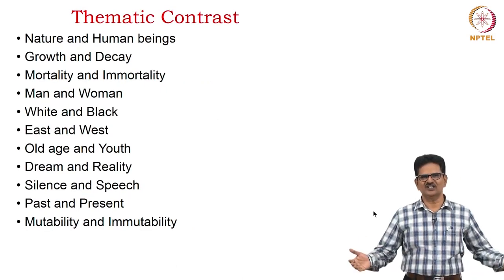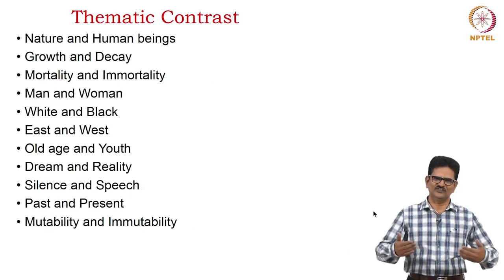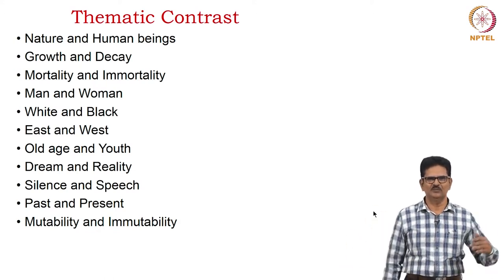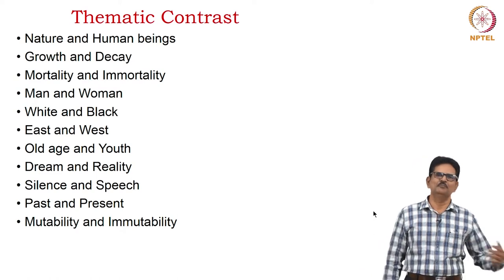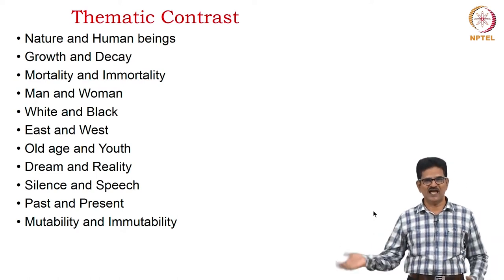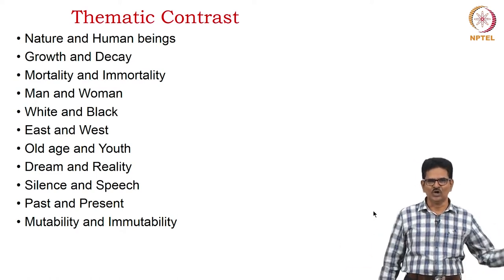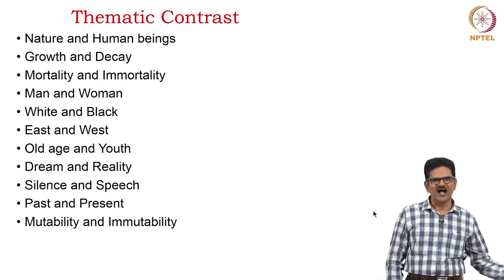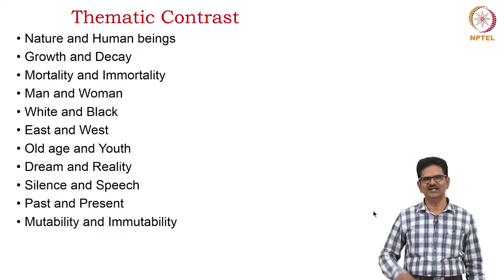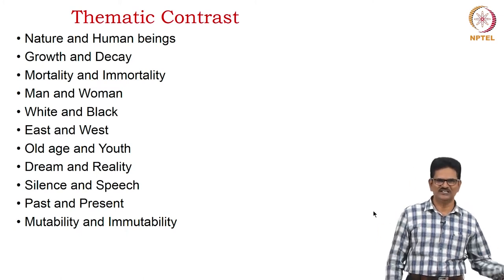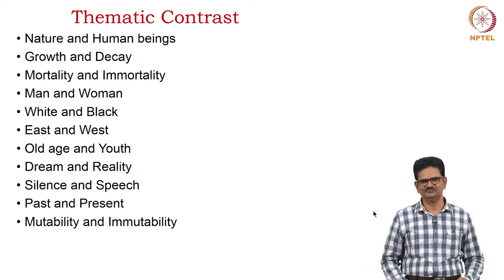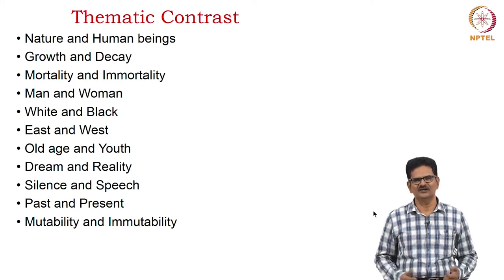The thematic contrasts in this poem are: nature versus human beings, growth and decay, mortality and immortality, man and woman, white and black, east and west, old age and youth, dream and reality, silence and speech, past and present, and mutability and immutability. Mutability is change; immutability is unchanging nature. The immortal, unchanging nature is the burden for Tithonus.